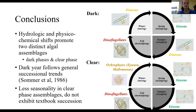To conclude, hydrologic and physical-chemical shifts promoted two distinct algal assemblages: the dark phase and clear phase assemblages. While dark years tended to follow the general successional trends seen in most temperate lakes, there was less seasonality in the clear phase assemblages, and they did not exhibit this textbook phytoplankton succession.